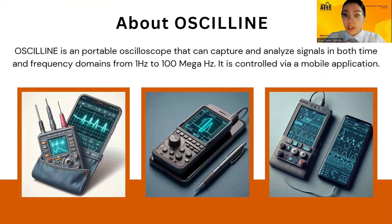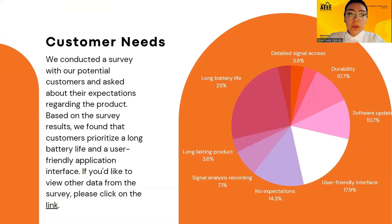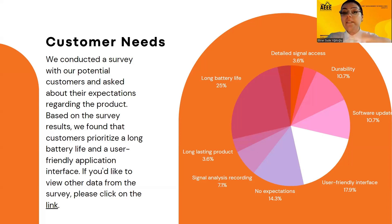Ossiline is a portable oscilloscope that can capture and analyze signals in both time and frequency domains from 1 Hz to 100 MHz. It is controlled via a mobile application. The preliminary design measures of the product are shown here. We prioritize customer needs during product development, conducting a survey among potential users. For detailed survey results, click the provided link. Based on the survey, customers emphasized better battery life and user interface. Now our system engineer, Ayça, will continue.